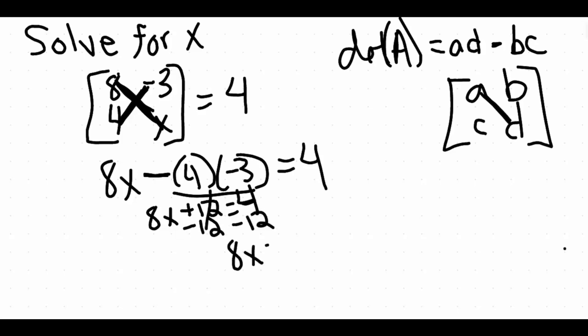We subtract both sides by 12, and we get negative 8 there. Last thing to do here is divide out the coefficient, and x is equal to negative 1. So that is the solution for x for this particular matrix equation here.